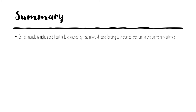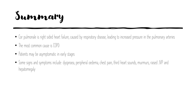That was a quick overview but it's important to understand the basics. Cor Pulmonale is right-sided heart failure caused by respiratory disease, leading to increased pressure in the pulmonary arteries and thus backlog into the venous system. The most common cause is COPD. Patients may be asymptomatic in the early stages, but signs and symptoms include dyspnea, peripheral oedema, chest pain, third heart sounds, murmurs, a raised JVP and hepatomegaly.